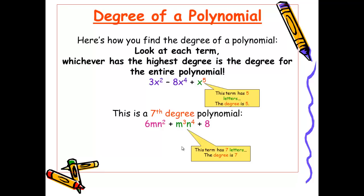In this next example, we have a seventh degree polynomial. Because the first term has m¹n², this would be a third degree term. m³n⁴ is a seventh degree. And 8 has a degree of zero. So since this term has seven letters, it's the winner. And this is our seventh degree polynomial.